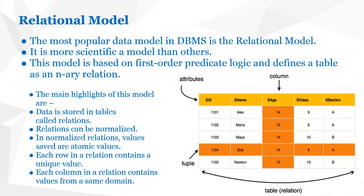For example, the row where SID is 1101 represents a student named LX, whose age is 14, class is 9, and section is A. Each row represents one entity. The columns represent the various attributes of the entity — such as SID, student name, age, class, and section.